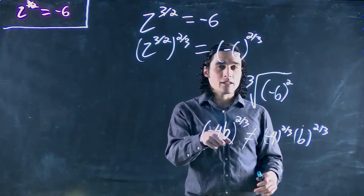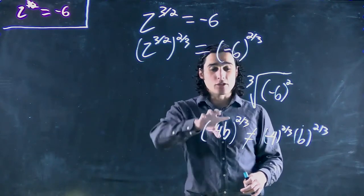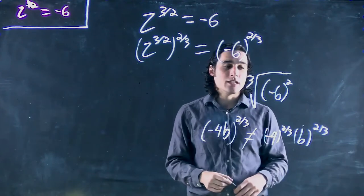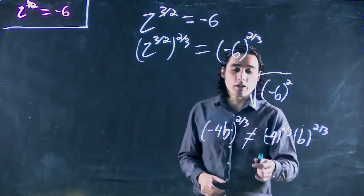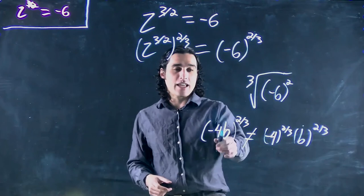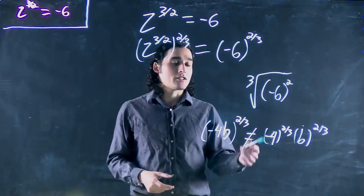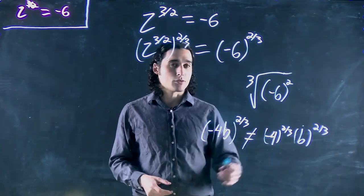But what if b had been a negative number? Then this whole thing would be positive, we can take a positive number to 2 thirds. So this rule does not work if these are negative. Because if we didn't know what b is, if this was a negative, it changes our answer completely. So we can't use this rule in that case.